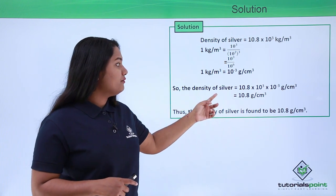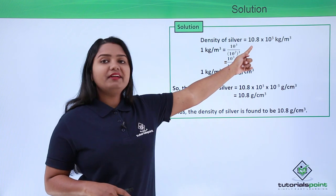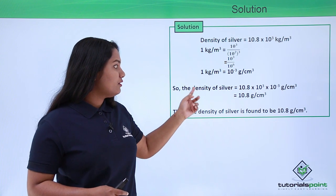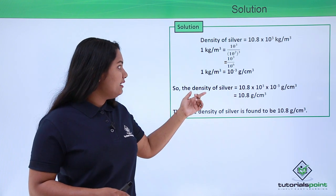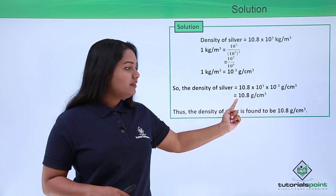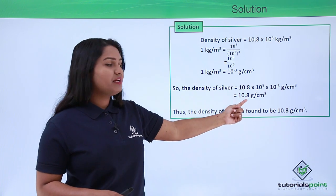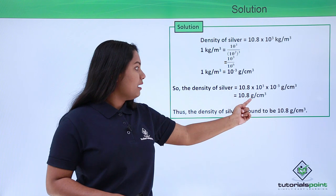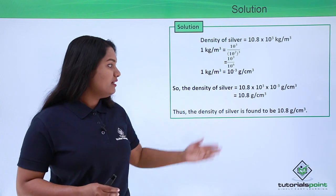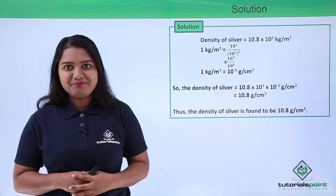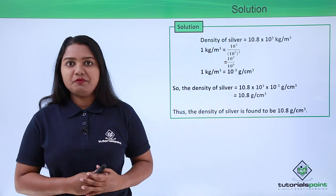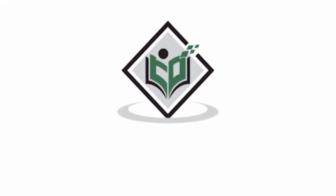The density of silver was found to be 10.8 × 10³ kg per meter cube. To convert this to grams per centimeter cube, we multiply by the conversion factor 10⁻³. On doing that, the density of silver in grams per centimeter cube is found to be 10.8 grams per centimeter cube. With this we have completed the solution of this problem. I hope this video was helpful to you. Thanks for watching tutorialspoint.com — simply easy learning.